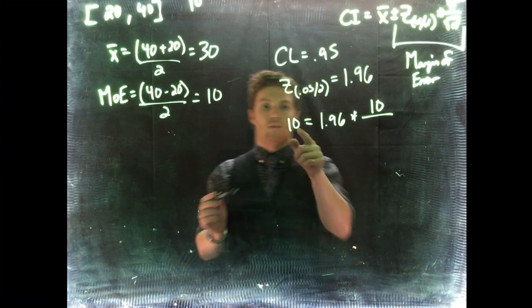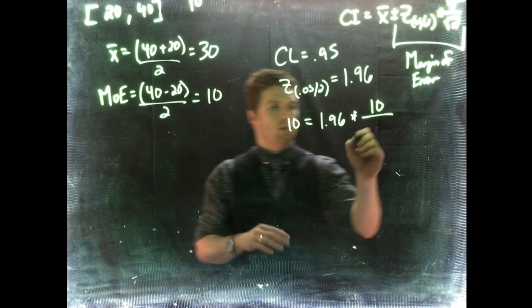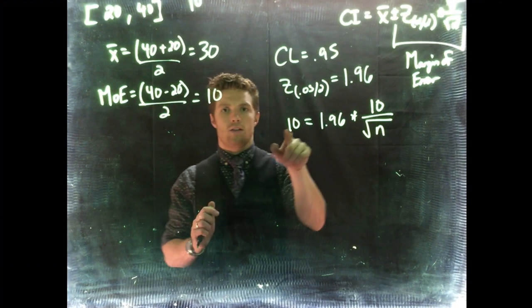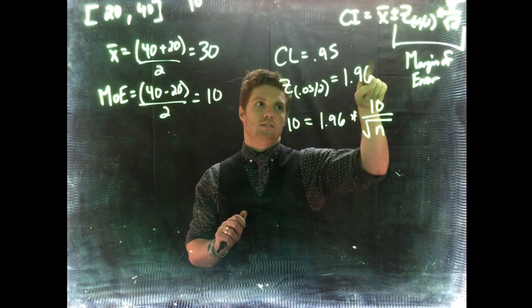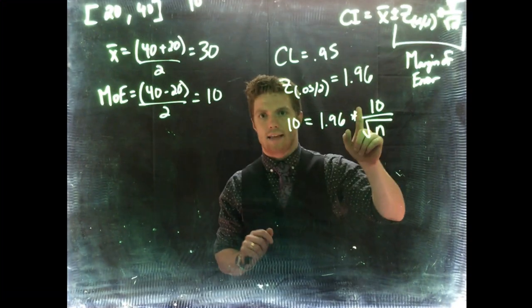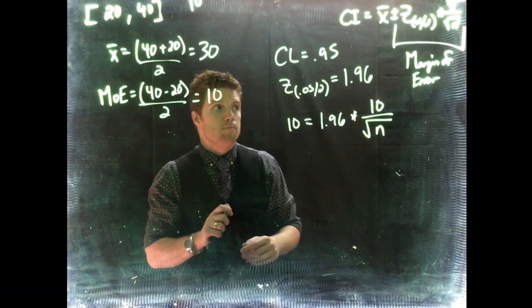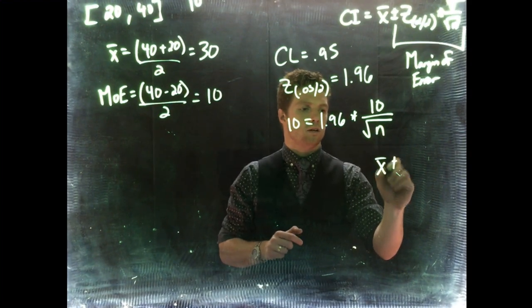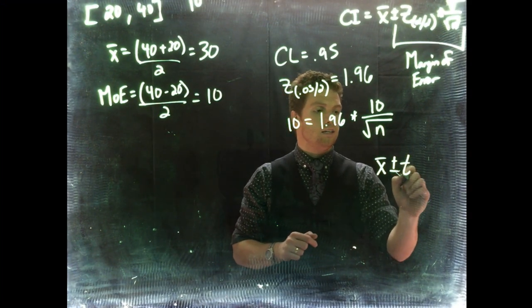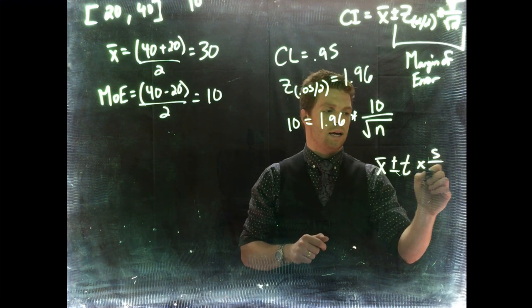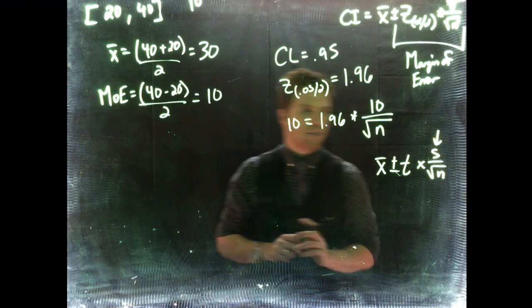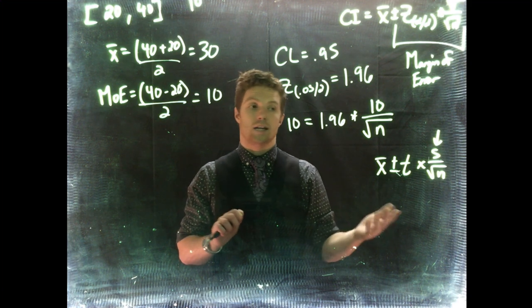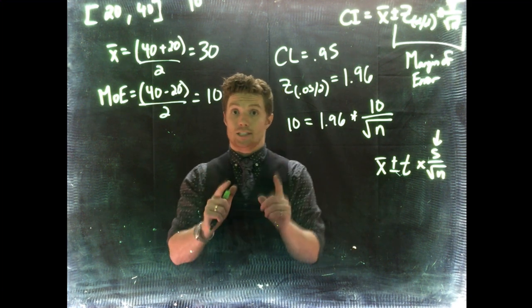We could back out the value of n to find the minimum sample size to get a confidence interval with a margin of error of only 10. Now if we don't know what the population standard deviation is—like if we use our other confidence interval equation with our t-score times s divided by square root of n—because of this, since we don't know what the sample standard deviation is, we can't actually calculate out what our minimum sample size would be.